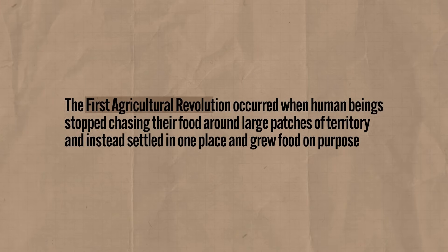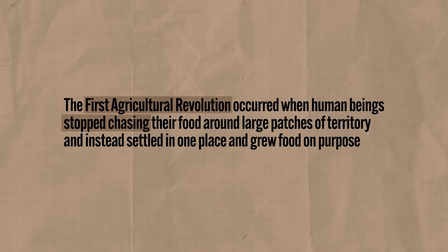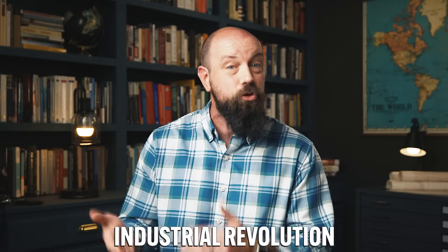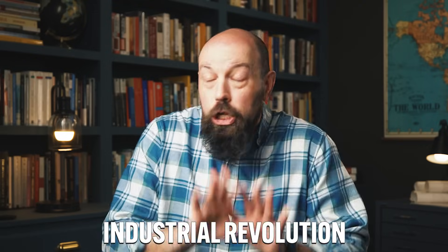Put it all together and here's what you get: the first agricultural revolution occurred when human beings stopped chasing their food around large patches of territory and instead settled in one place and grew food on purpose. This is arguably the most important and far-reaching turning point in all of history, the only potential rival being the industrial revolution, but we'll get to that in Unit 7.